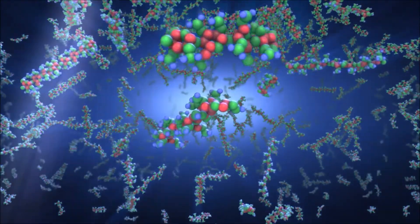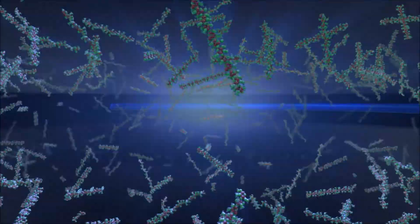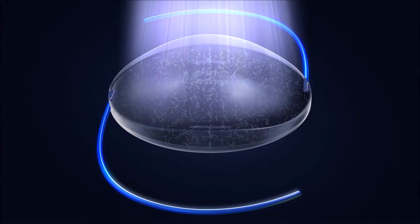When the adjustment process has been completed to the satisfaction of doctor and patient, the entire lens is exposed to the treatment light to polymerize all remaining macromers, effectively locking them in place to prevent any further changes.